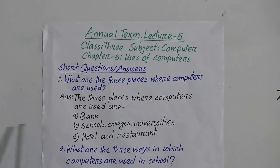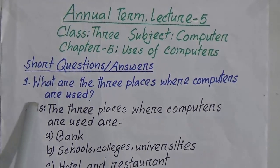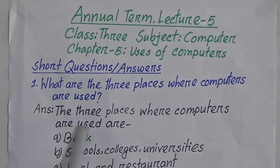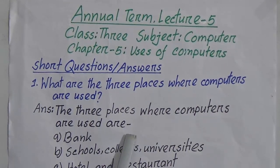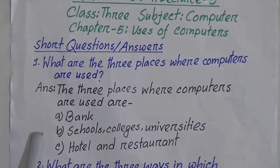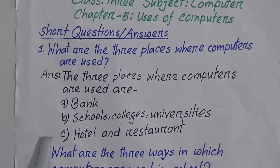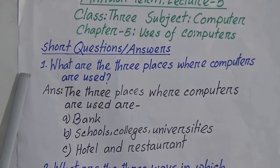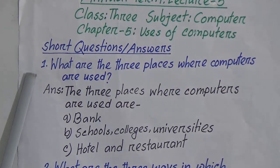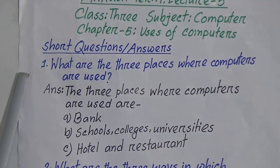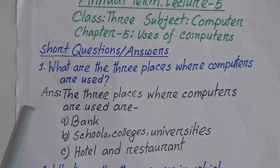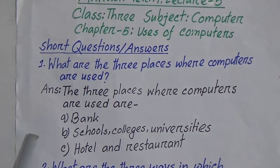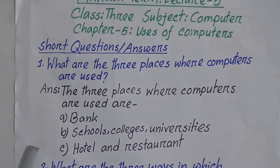Annual term, Class 3, subject: Computer, Chapter 5 — Uses of Computers. Short question and answers. Number 1: What are the three places where computers are used? The three places where computers are used are: A) Bank, B) Schools, colleges, universities, C) Hotel and restaurant.